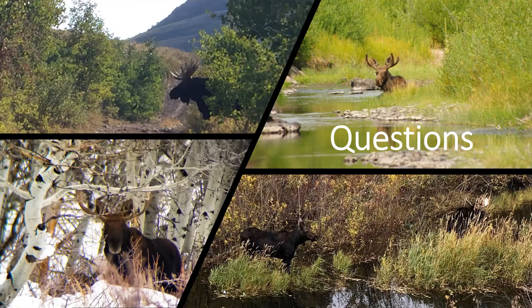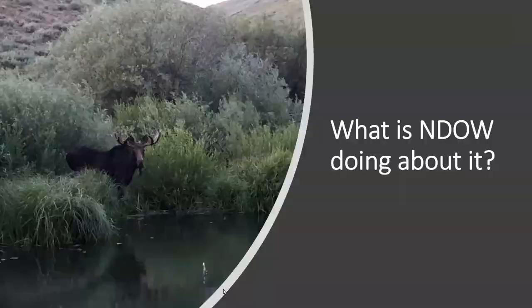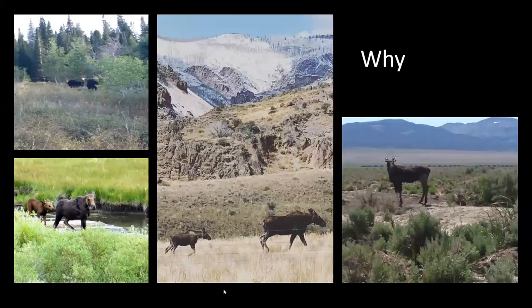Another question: are they breeding in Nevada or are all of these coming from other states? We do know there's breeding in Nevada — one of the pictures Julie was showing was actually one of our collared cows with her calf. We have documented collared cows, as well as other cows that people have seen, having calves in Nevada. So yes, they are reproducing and staying here in the state year-round.